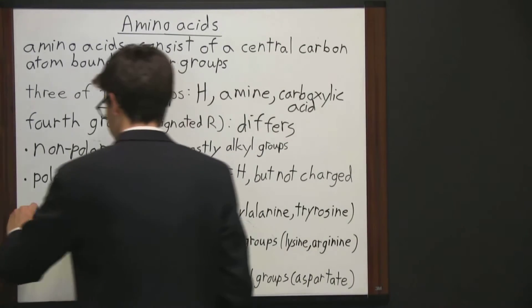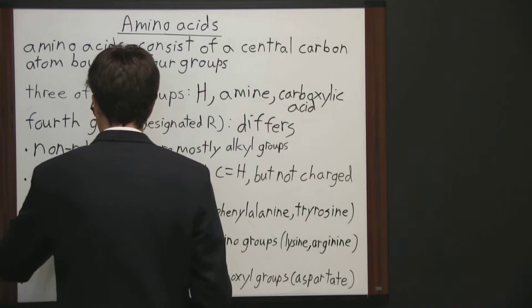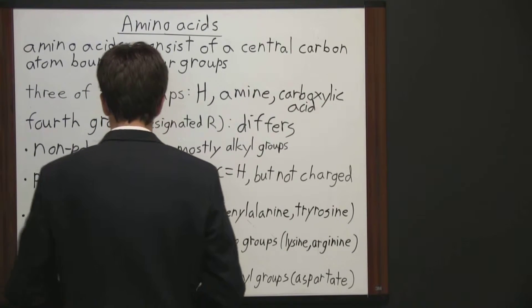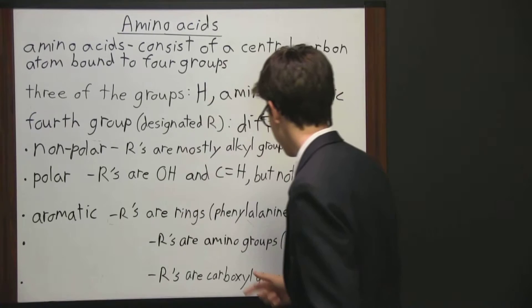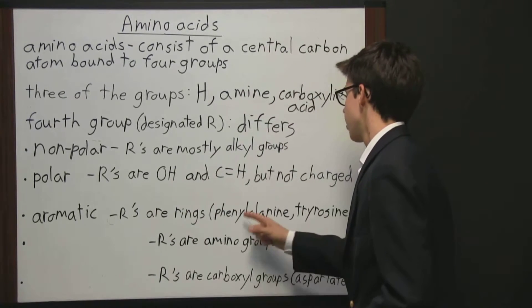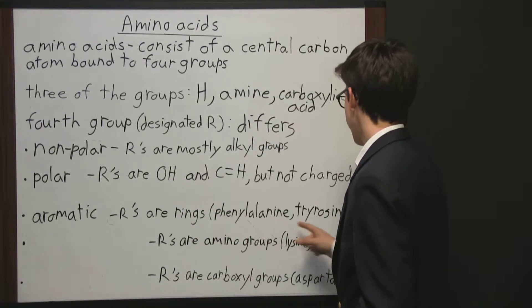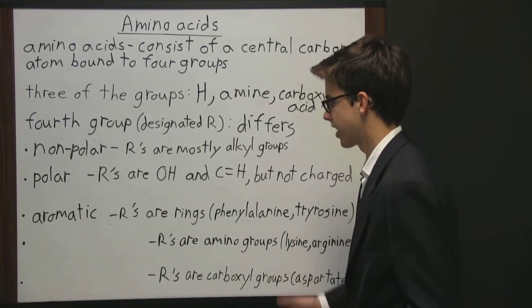The third group is the aromatic amino acids, where the R groups are rings. Examples of aromatic amino acids include phenylalanine and tyrosine.